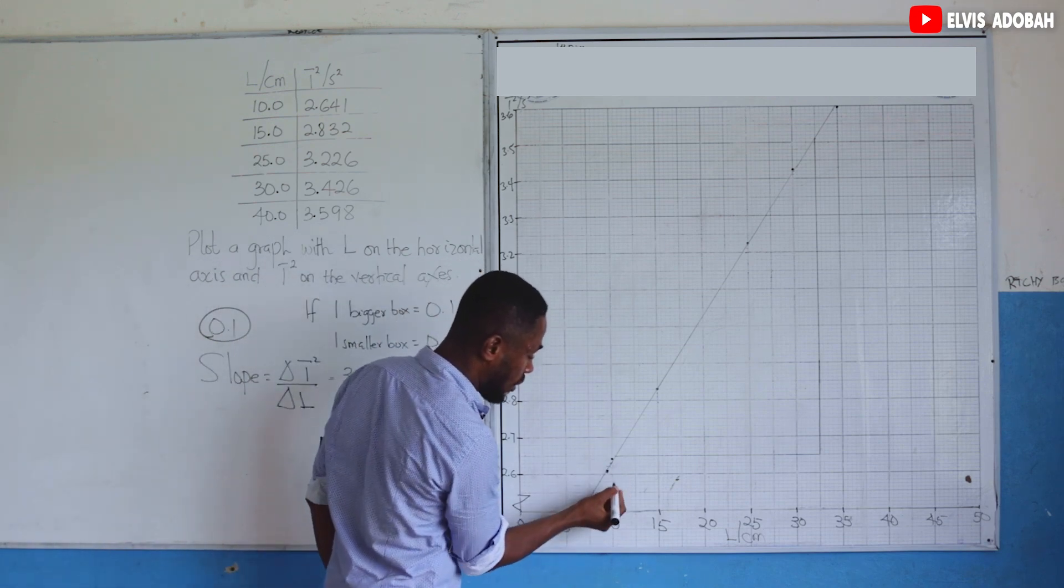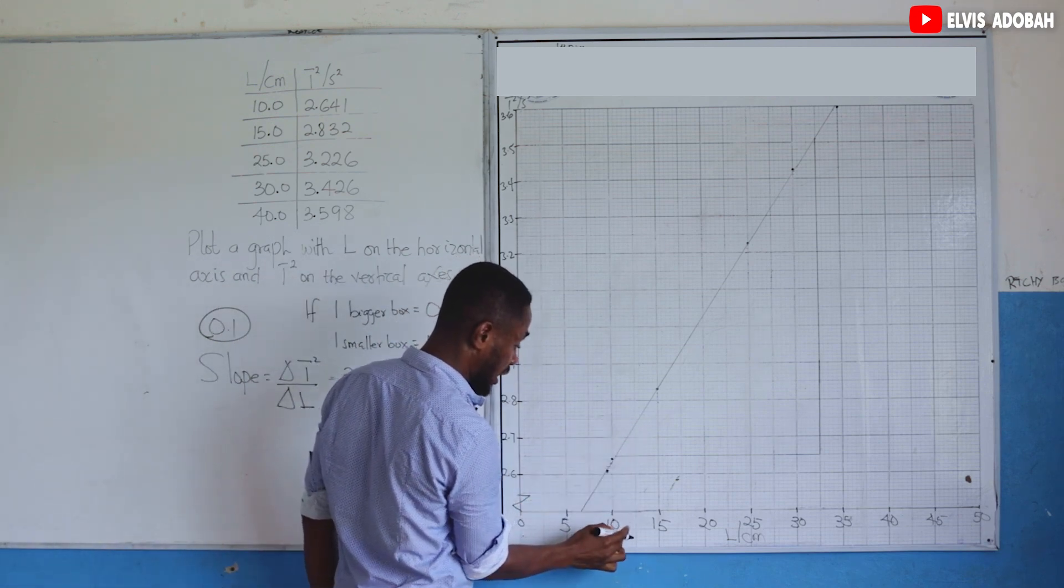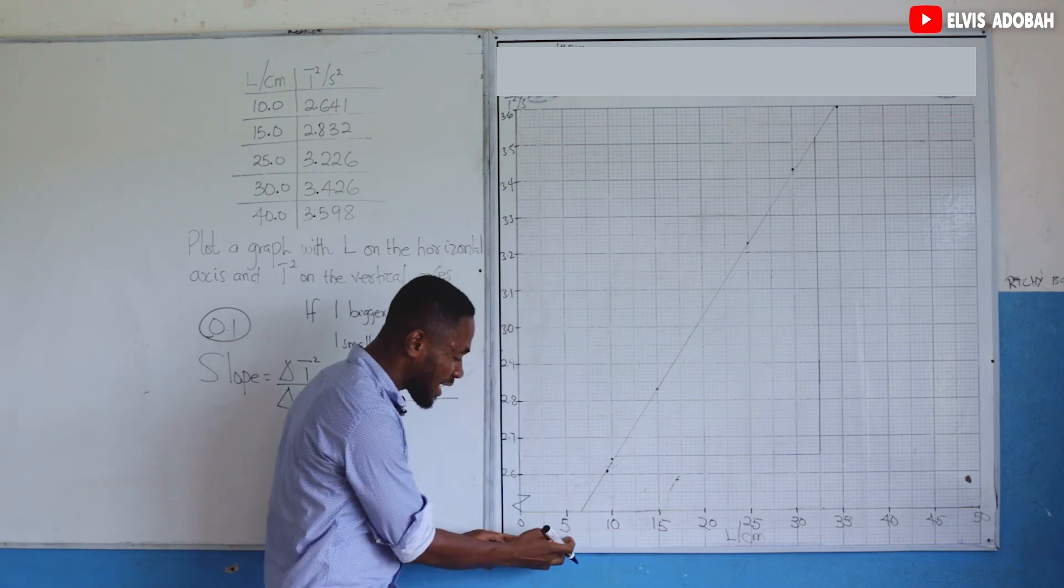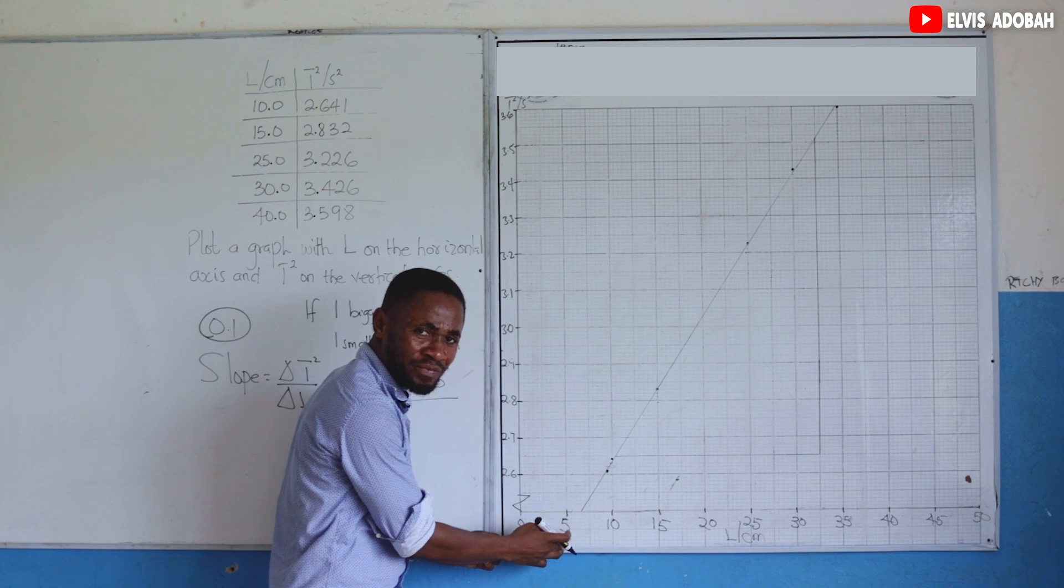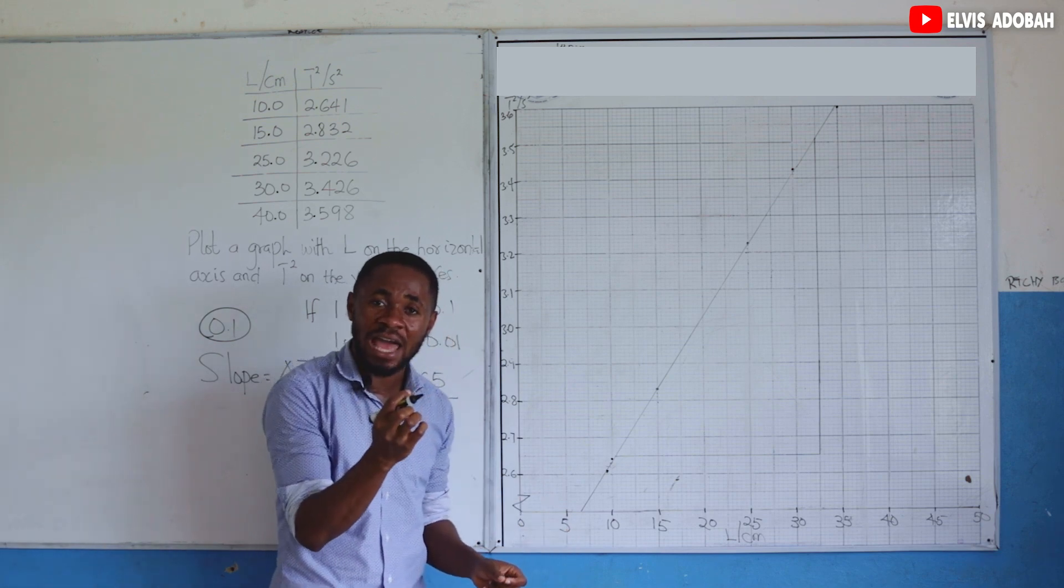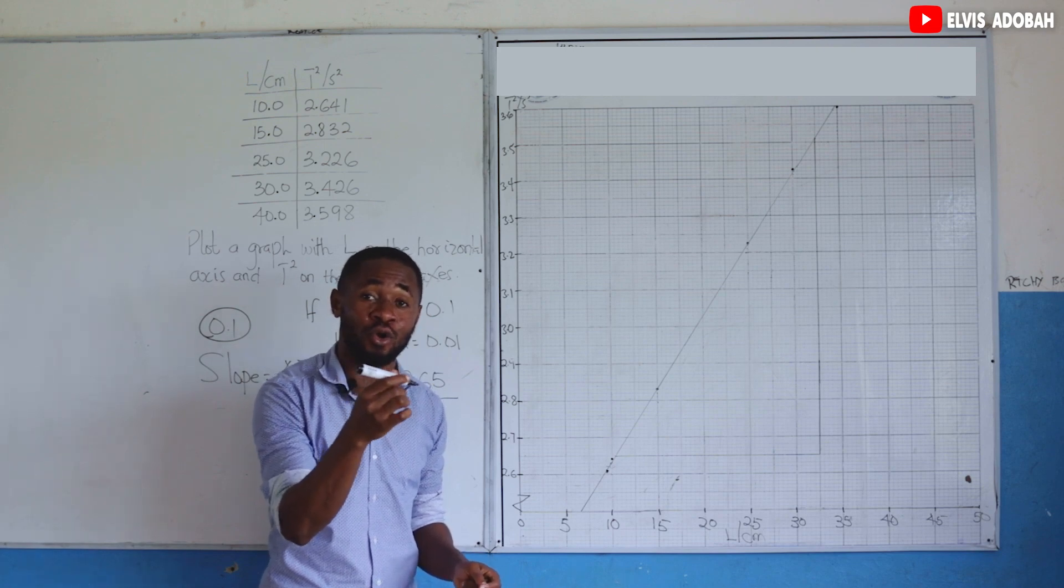Then look at the second one to its corresponding horizontal axis value. Now, over here, each bigger box is 5. Can you see that means that each smaller box will be 5 divided by 10, which is 0.5.